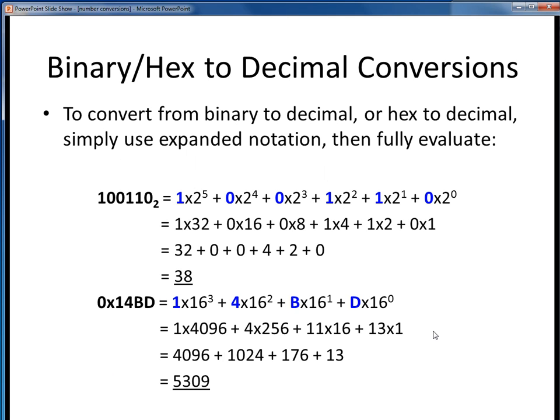So here are some examples of going from binary or hex to decimal. For example, let's say we wanted to convert this binary number to decimal. We start in the lowest value here, 2 to the 0, and figure out what the highest place value of 2 is that we require. So we have 2 to the 0, 2 to the 1, 2 to the 2, 2 to the 3, 2 to the 4, and 2 to the 5. So 2 to the 5 is the highest place value of 2 required.